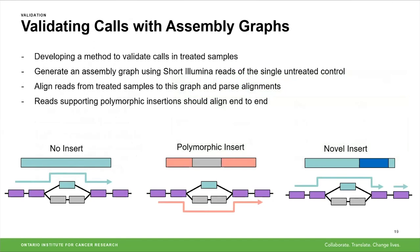We're also looking at validating our calls with assembly graphs — a method currently in development. We're generating an assembly graph using short Illumina reads of a single untreated control, then aligning reads from the treated samples to this graph using a tool such as GraphAligner and parsing the alignments. Reads supporting a polymorphic insertion should align end to end, as the polymorphic insert sequence is present in the graph, while reads supporting a novel insertion should have a broken alignment right at the insert position, since that insert sequence is absent from the untreated control graph.